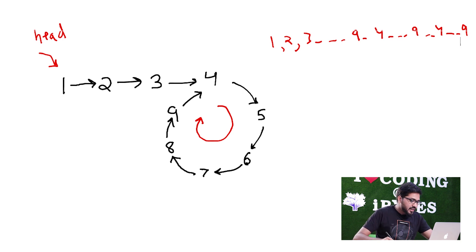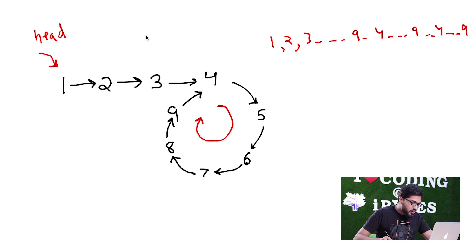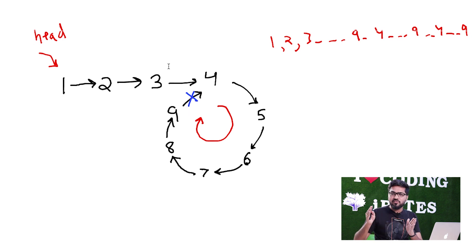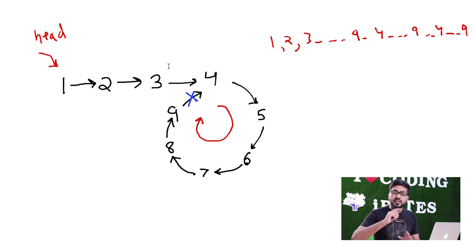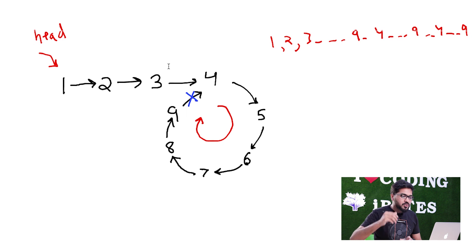So what we have to do is detect the loop and then remove it. Basically it should only print 1, 2, 3, 4, 5, 6, 7, 8, 9. After 9, we have to set the next to null. But how do we find it? How do we know that node 9 is forming the loop? So this is what we need to detect.